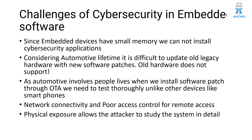Network connectivity is a major challenge, because the car will be moving all around — in one place the signal will be there, in another place the network will not be available. Poor access control for remote access is also an issue, especially for autonomous Level 4 vehicles where a remote vehicle operator needs to take control when needed. Additionally, physical exposure of an embedded device allows an attacker to study it completely in detail, which is also a threat and vulnerability associated with embedded software.